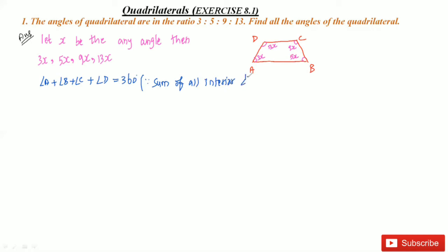I'm using this here. A is actually 3x, so I'm substituting 3x here. B is 5x, C is 9x, and D is 13x. So I'm taking all the angles.